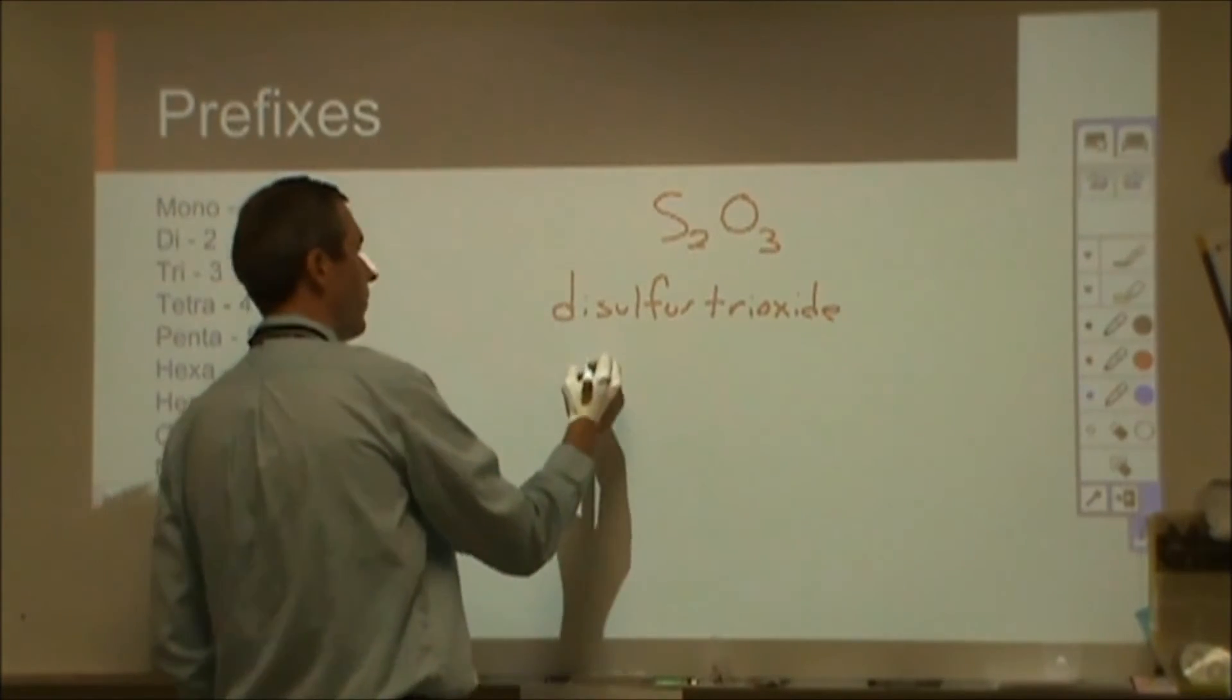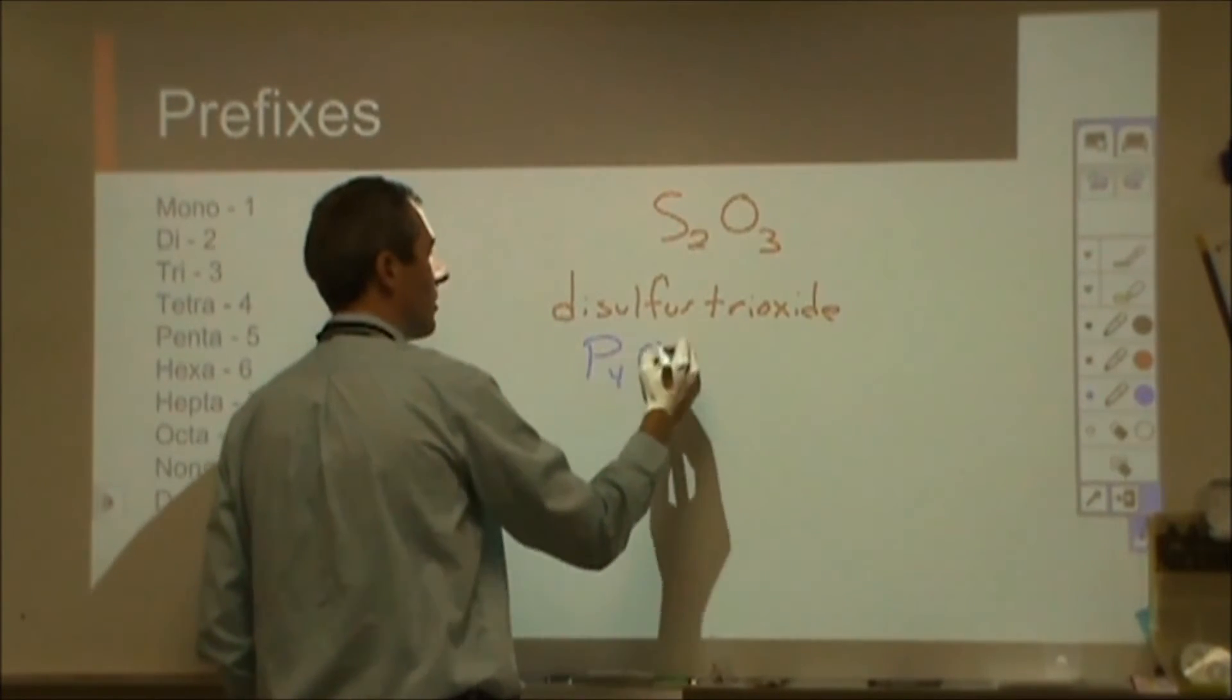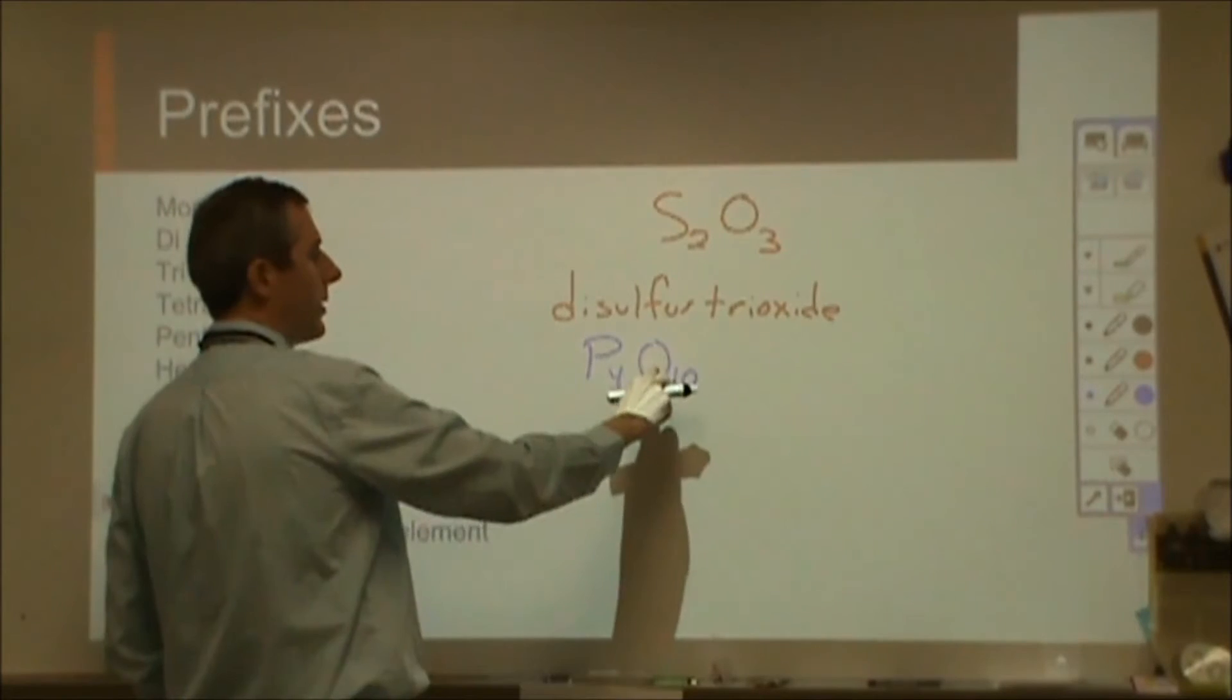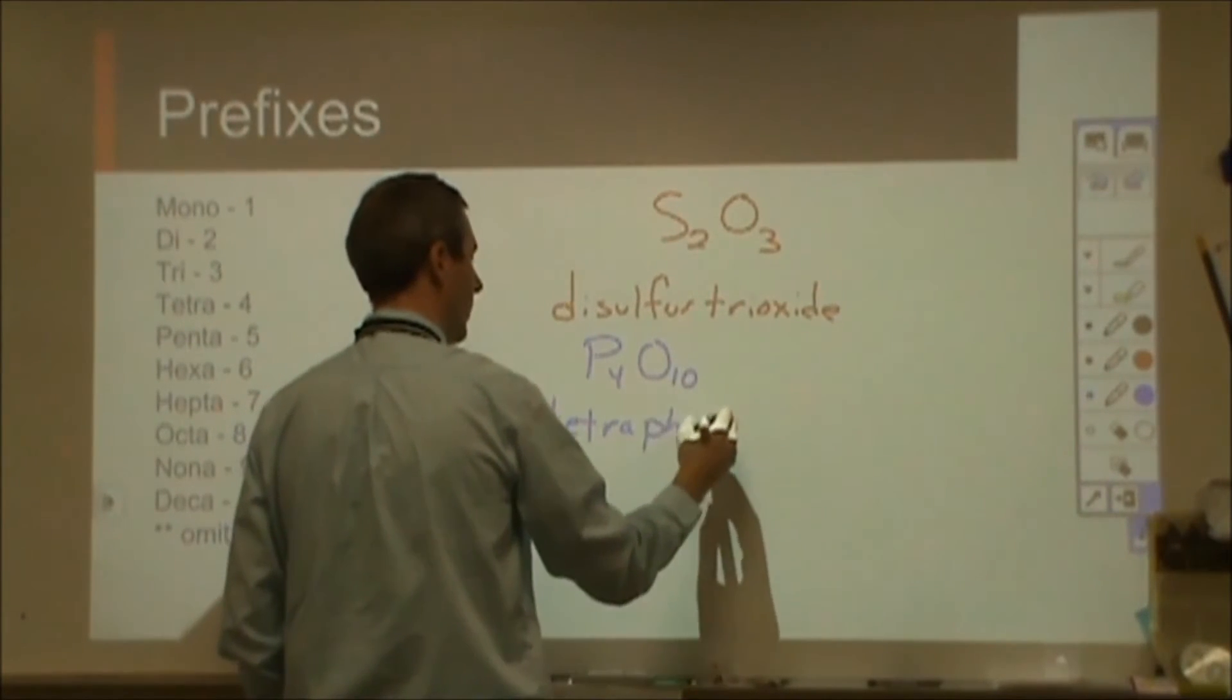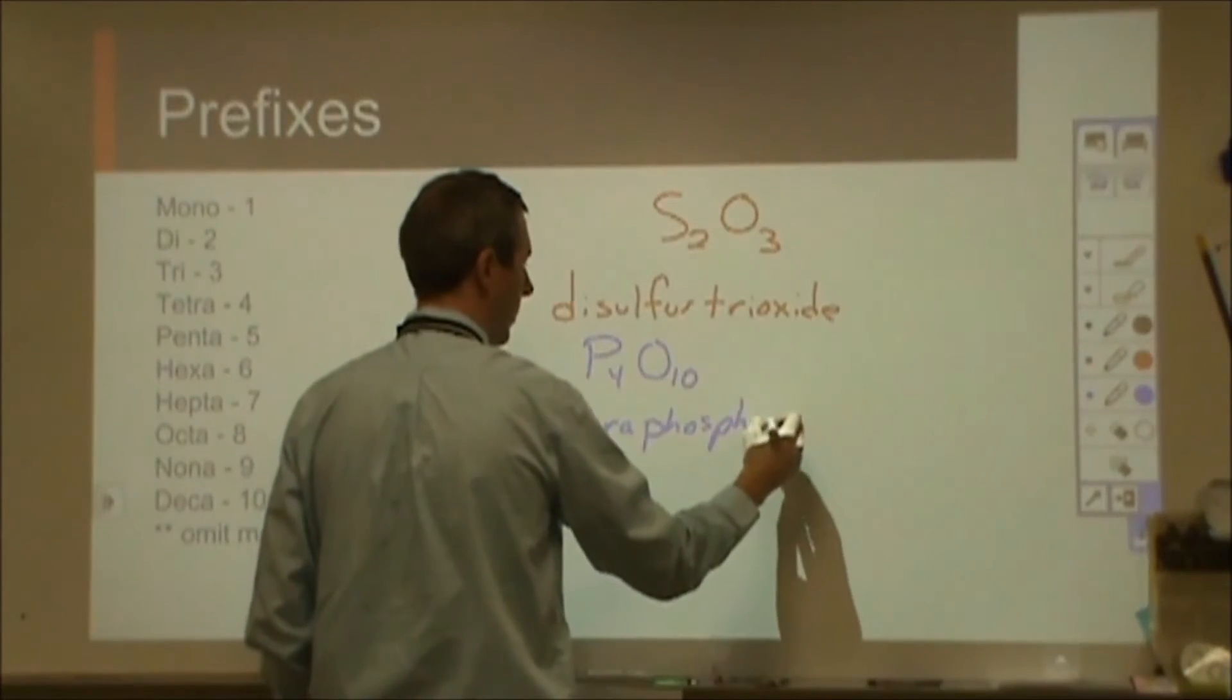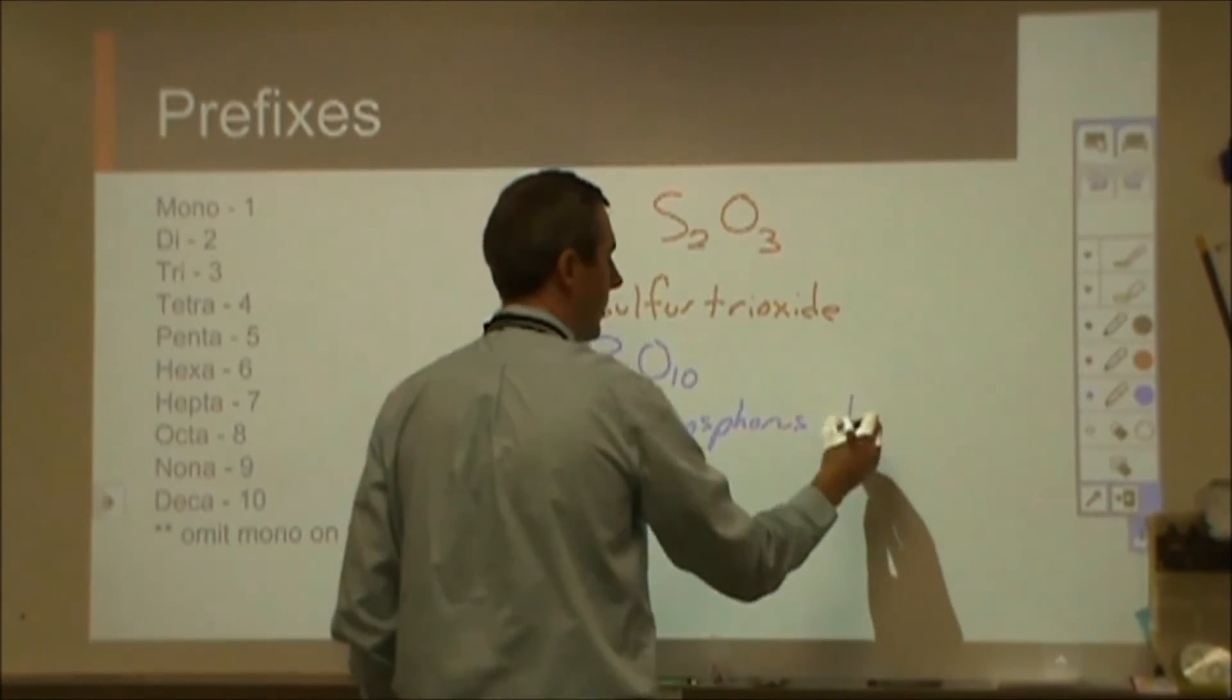So if we go for P4O10, we have phosphorus, we have oxide, we would say tetraphosphorus, and then decoxide.